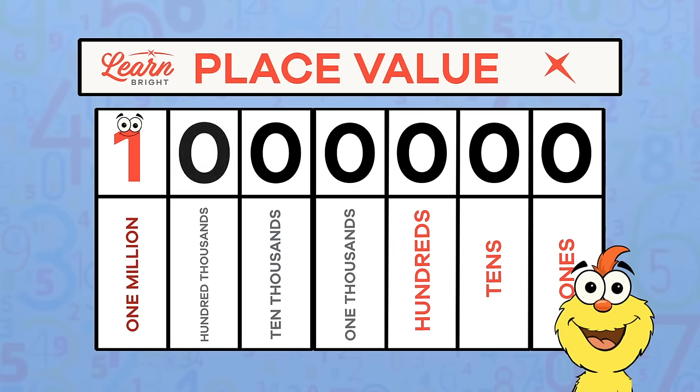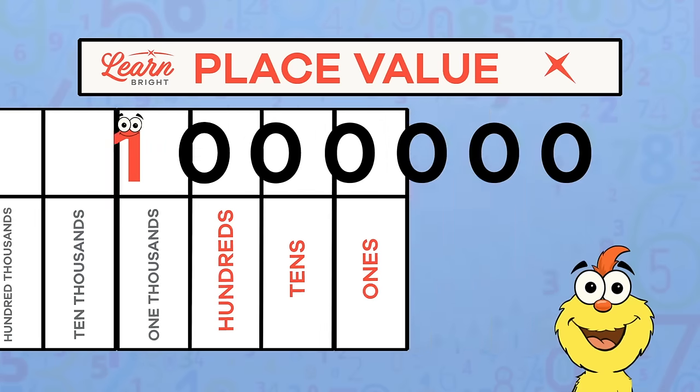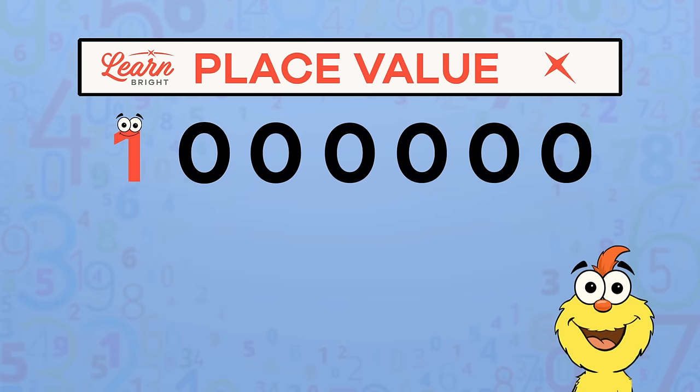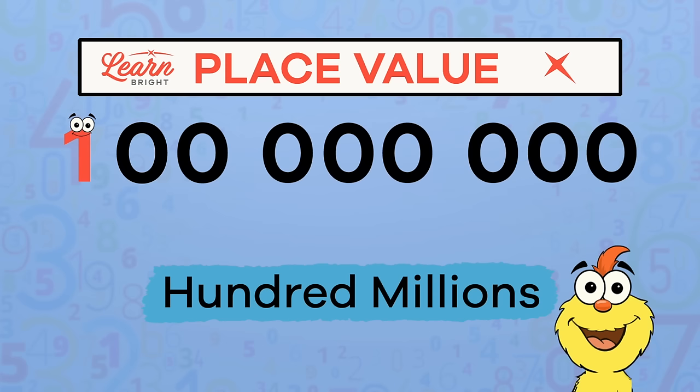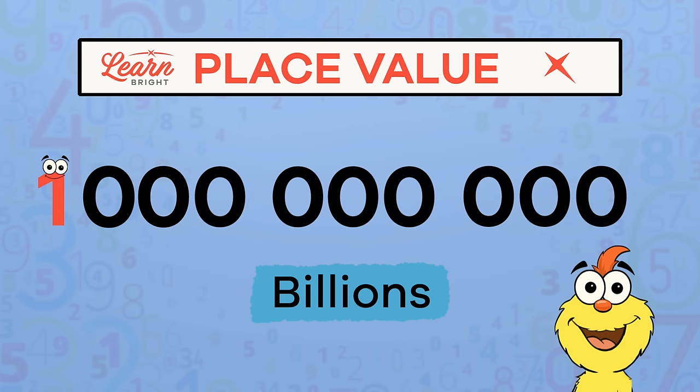Can you see the ones, tens, and hundreds pattern repeating? On this next chart, we get to one millions place value. The pattern then repeats again to ten millions, hundred millions, and then billions.